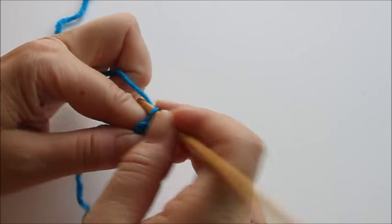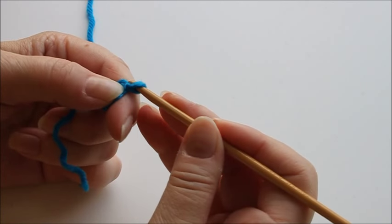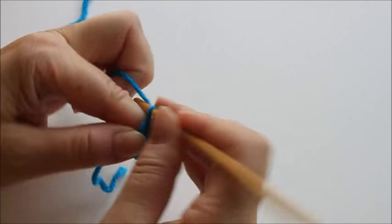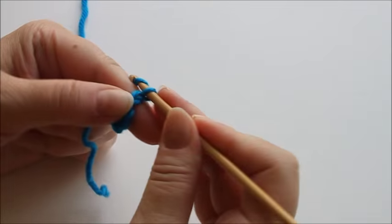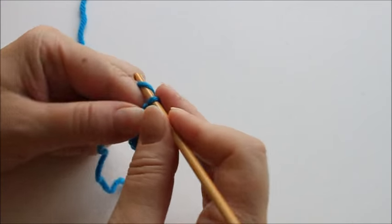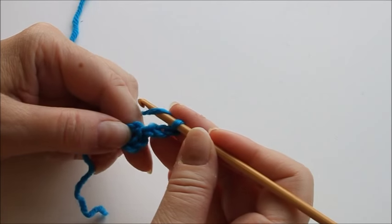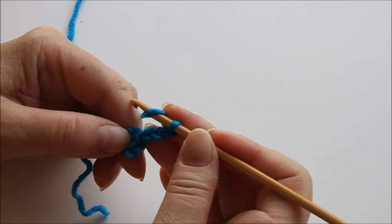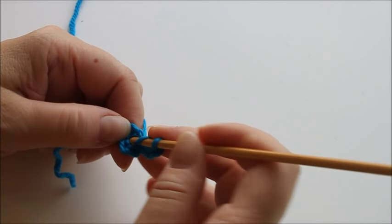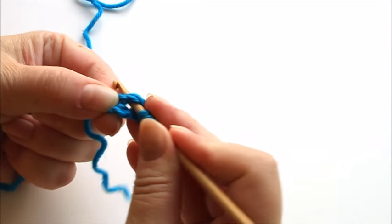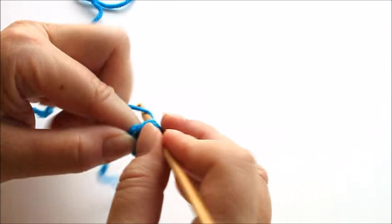Then again, just like any granny square, I chain three to form the first treble. I'm using the British terms, it's double crochet in American terms. Another treble.